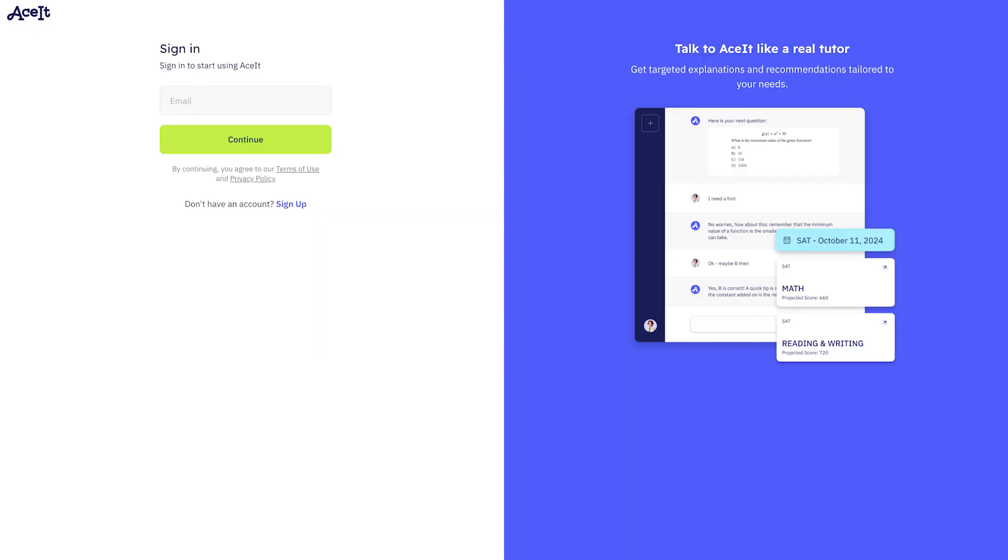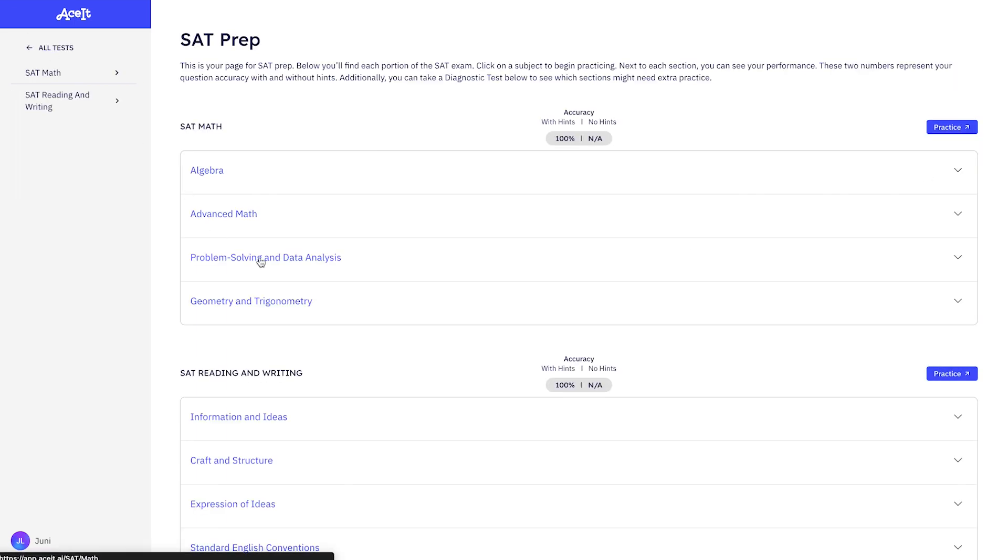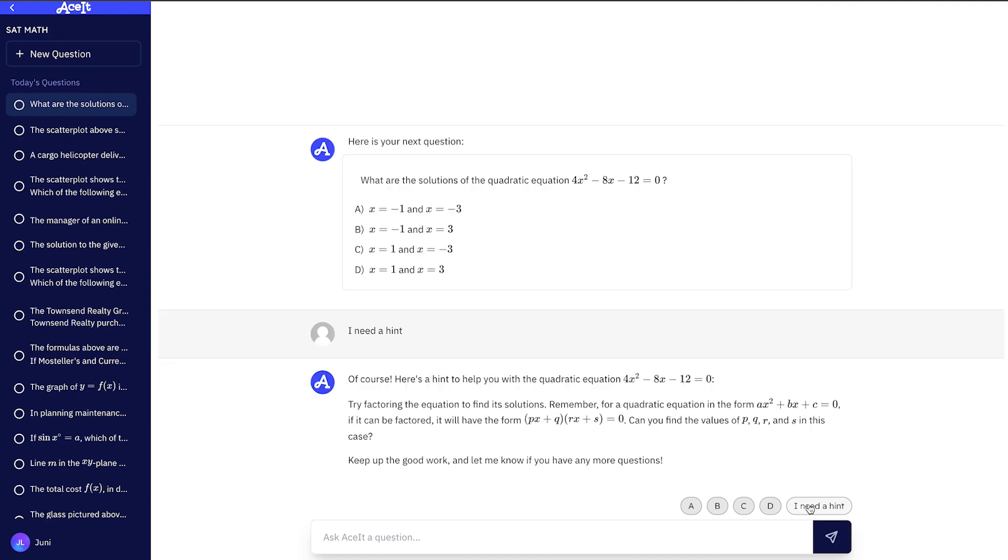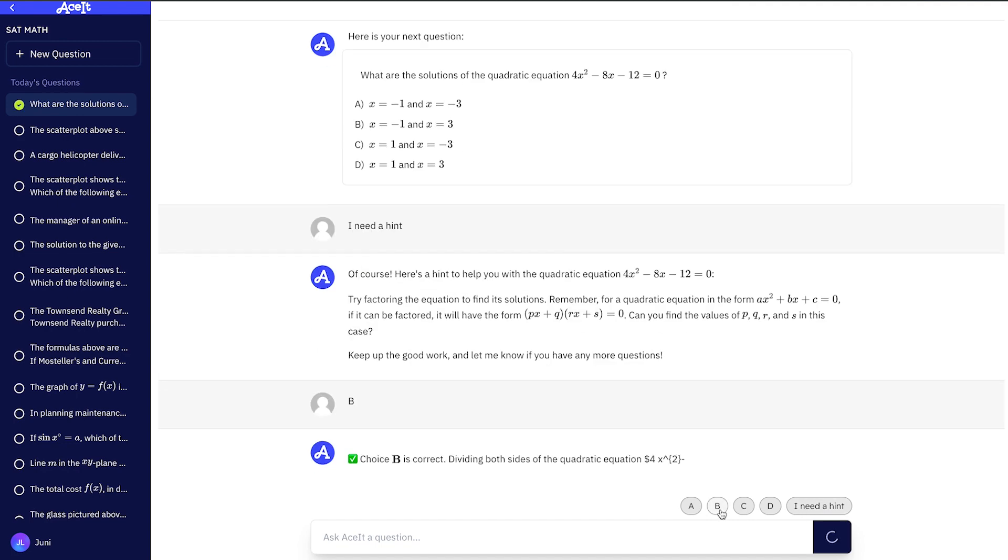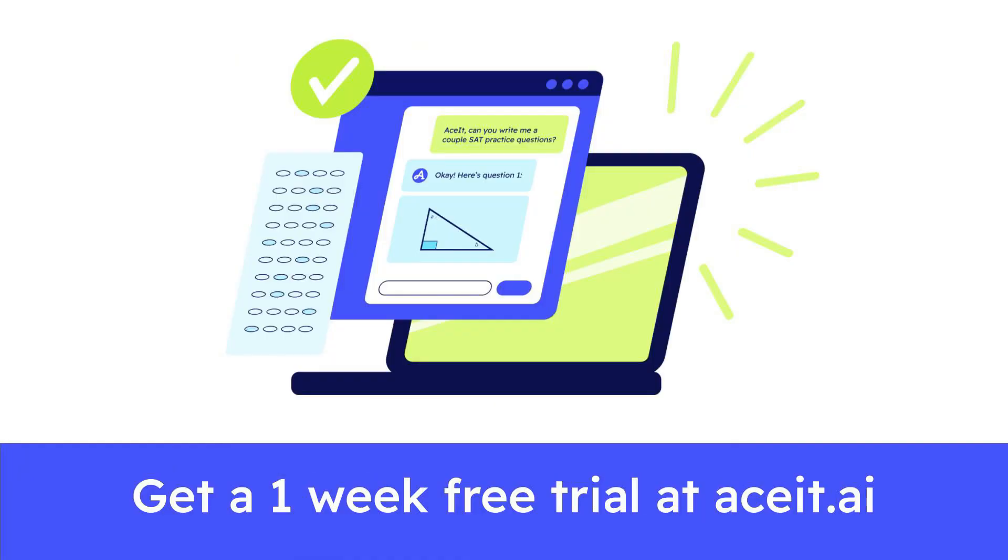For more practice problems and access to a 24-7 online study tool, check out ACET at the link below. ACET is the ultimate study tool for the SATs and the ACTs created by Junie Learning, an award-winning educational tech company that has helped thousands of students take their learning to the next level. Get a one-week free trial when you use the link in the description.